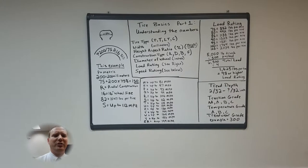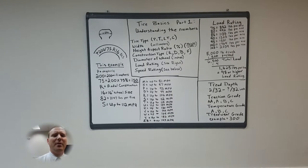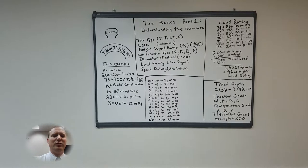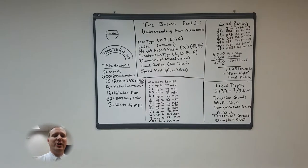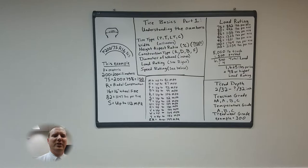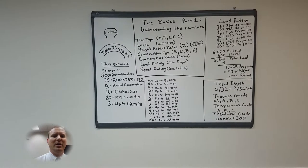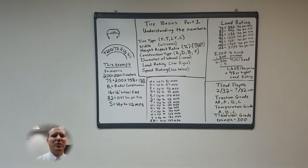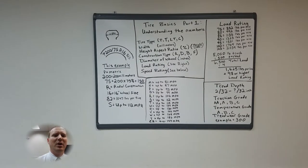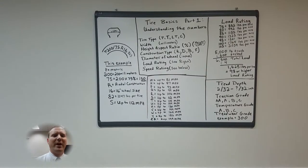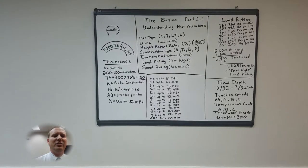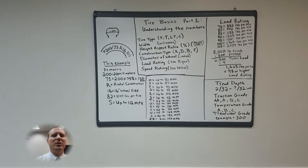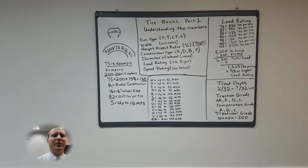On the bottom right you'll see some definitions. Tread depth is measured in 30 seconds of an inch. In most states once your tire reaches 2/30 seconds it is deemed unsafe and illegal to drive on. This is where you measure with a penny and if you see the top of Lincoln's head you have gone past 2/30 seconds of an inch. Most tires from the factory have a 10 to 14/30 seconds tread depth initially which gives you a usable range of 8 to 12/30 seconds.